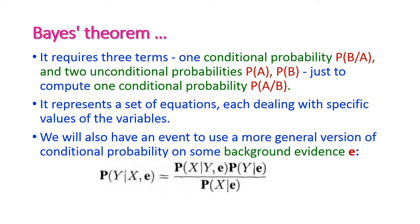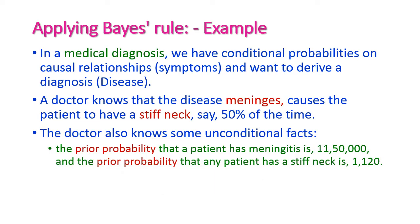The general equation is: P(Y | X, E) = P(X | Y, E) × P(Y | E) / P(X | E), where E is the background evidence. Now we will see one example applying Bayes rule in medical diagnosis, where we have conditional probabilities on causal relationships — that is, symptoms — and want to derive a diagnosis, otherwise called a disease.